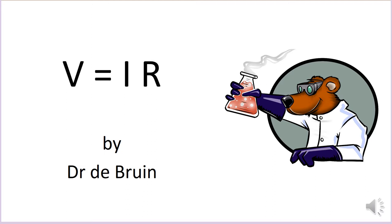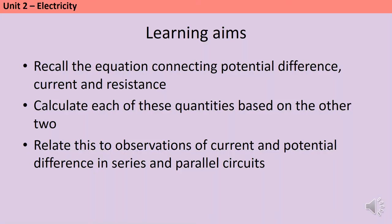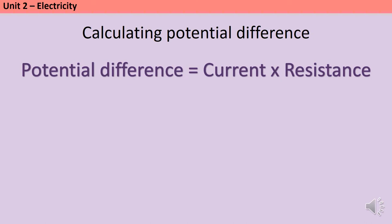This is a tutorial video for GCSE Physics looking at the relationship between potential difference, current and resistance in both series and parallel circuits. By the end of this video you should be able to recall the equation that connects potential difference, current and resistance, and calculate each one of these three quantities based on information about the other two. You should also be able to relate this to observations of current and potential difference in both series and parallel circuits.